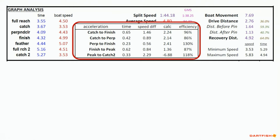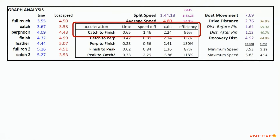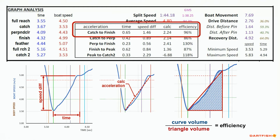This section is the analysis of acceleration of each part of the stroke listed. To explain this section, we will review the curved section catch to finish. Here we can see in the lower left graphic the time and speed difference for this part of the stroke. The lower middle graphic shows the calculated acceleration from catch to finish. Finally, the efficiency is calculated by dividing the volume under the speed curve — the blue hatched area — by the volume in the area under the lineal acceleration line, the red triangle. Efficiency provides insight to the actual boat movement during each part of the stroke.